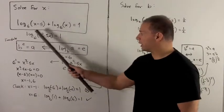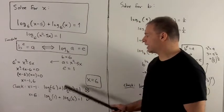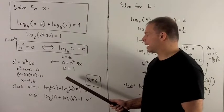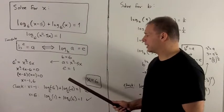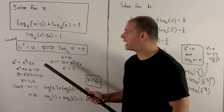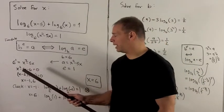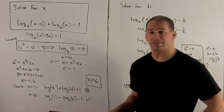So unraveling our equation here, my base is 6, my answer is x squared minus 5x, my exponent is equal to 1. I put it to the other side, and I have 6 to the 1 equals x squared minus 5x.